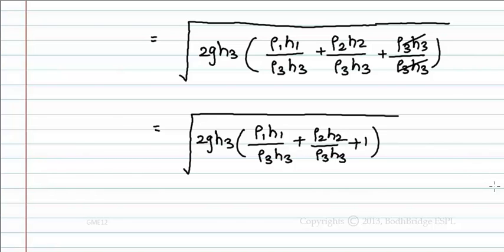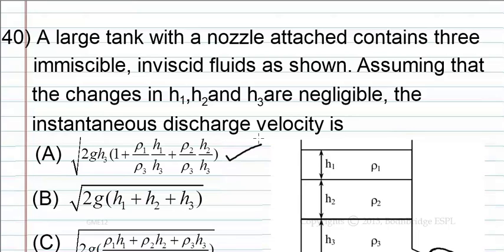So the correct option is option A: root of 2gh3 into 1 plus rho1 h1 by rho3 h3 plus rho2 h2 by rho3 h3.